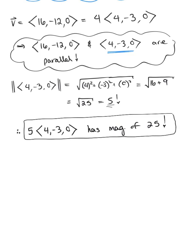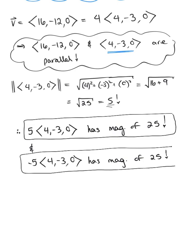But we also need another vector. So remember that if we have a negative scalar multiple, it's simply pointing in the opposing direction. So we can say that the vector negative 5 times 4, minus 3, 0, also has a magnitude of 25. Since we'll have the same length, it's just that the vector is pointing in the opposing direction.